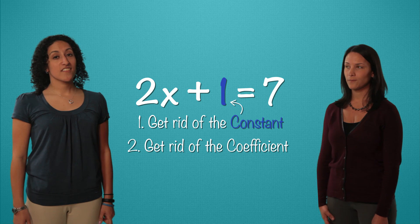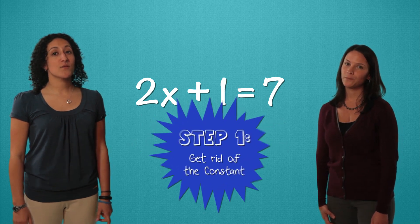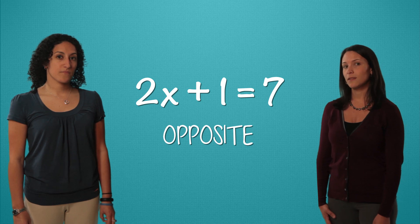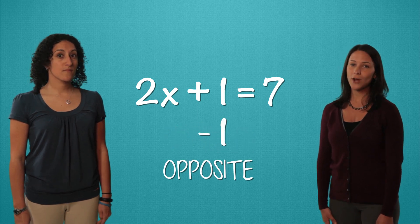This one here is our constant. The constant stands alone so we deal with the lonely number first. To get rid of it we do the opposite. This is a plus 1 so we want to subtract 1.